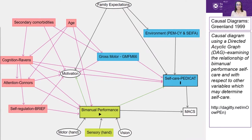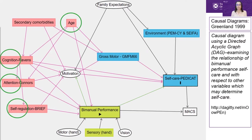In this DAG you can see the relationships we hypothesised existed between self-care and other person and environmental factors. The program DAGGITY identified the variables which were required to be adjusted for to estimate the total effect of bimanual performance on self-care in this holistic framework. These were age, cognition, attention span and self-regulation. Only these variables identified as being required for inclusion in multiple regression analysis were used in the modelling.